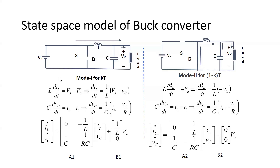Applying KVL, we can write the equations during mode 1. Mode 1 is for the duration of d-on, which is k times T, where k is the duty cycle and T is the time period. The voltage across the inductor gives L times diL/dt equals Vs minus Vout, which can be rewritten as diL/dt equals (1/L) times (Vs minus vC), since Vout equals vC.